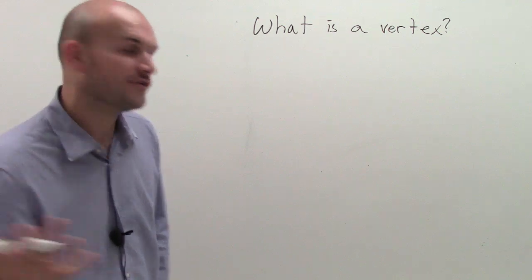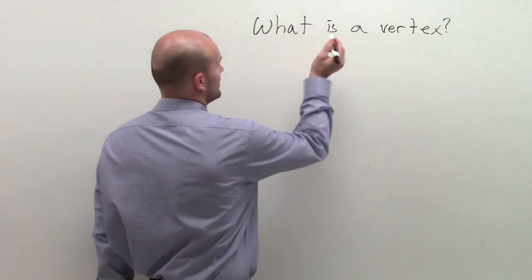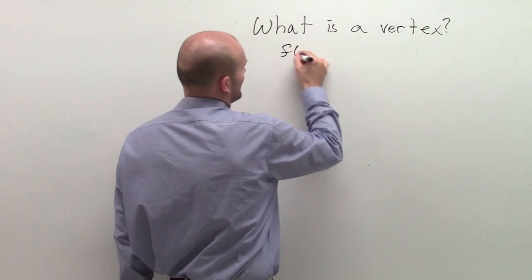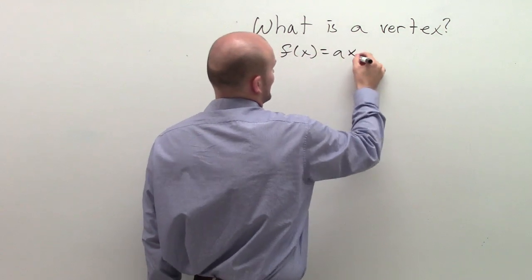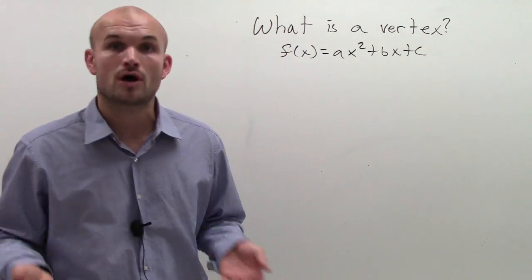Remember, ladies and gentlemen, the vertex of our parabola, which we're going to be dealing with right now, is first of all, let's look at f(x) = ax² + bx + c. That is going to be the formula for our quadratic.